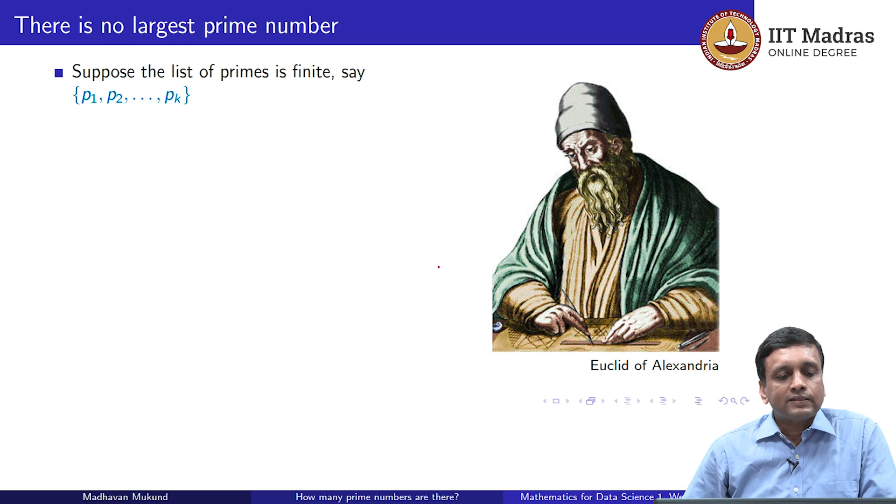What Euclid said is that suppose the list of primes is finite. If it is finite, then we can list them out and it is a finite set, p1 to pk. We do not have to be in any particular order; we can assume that p1 is the smallest one, it is 2, p2 is 3 and so on. But it does not really matter as long as this exhaustively completes all the primes. Now, we construct a new number, which is the product of all these primes. We multiply all these primes by each other, and then we add 1. So, n is p1 times p2 times up to pk plus 1.